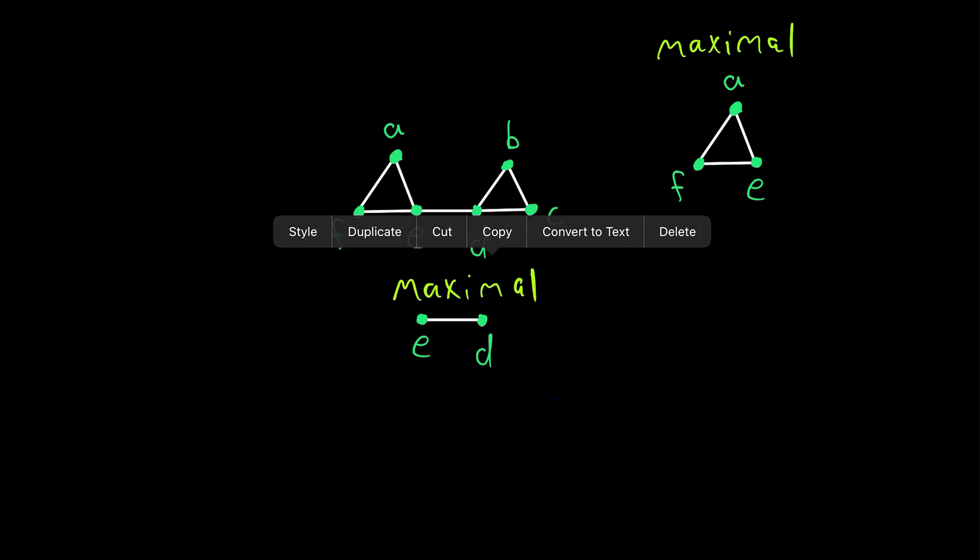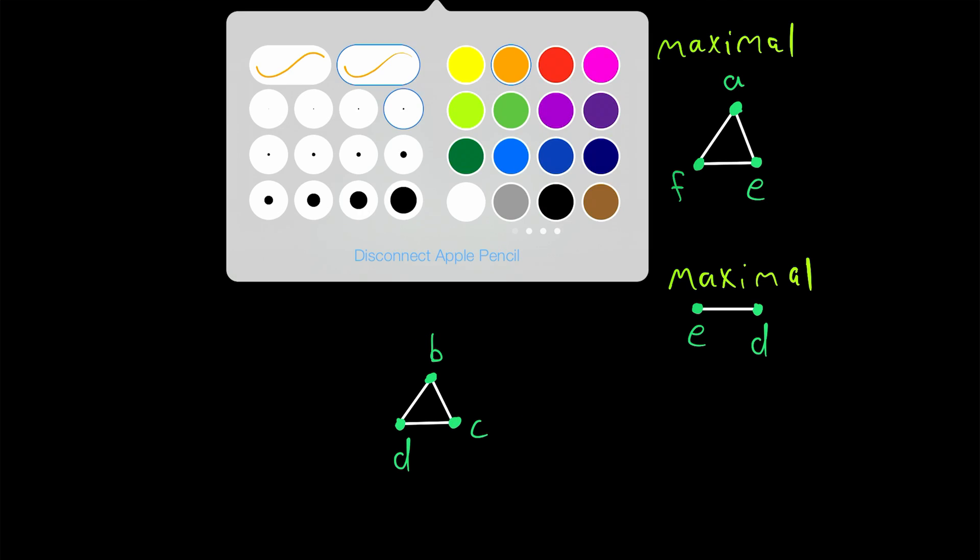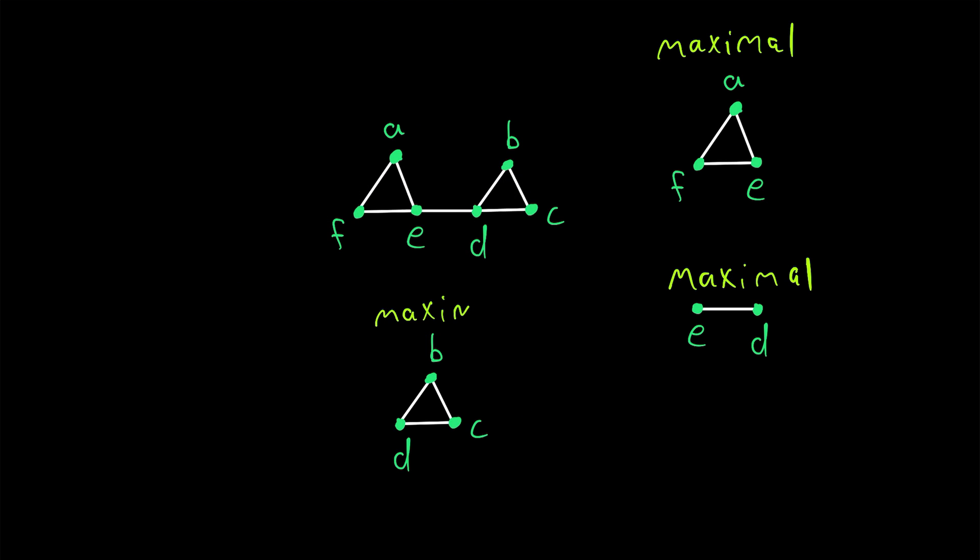And, of course, we can immediately see that this clique is not maximum, because the first maximal clique we found had more vertices. And then you probably don't need me to take you super slow through the thought process to find this next maximal clique. It looks exactly like our first maximal clique, but it has different vertices. So, this is another maximal clique in the graph.